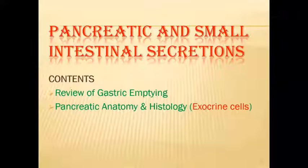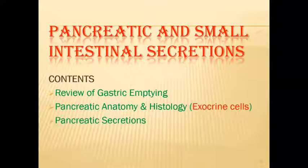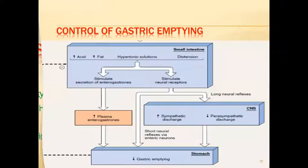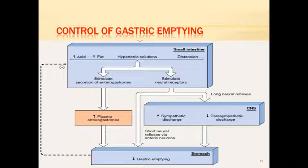We are looking at anatomic histology, especially exocrine function of the GIT, because we are interested in the production of enzymes involved in digestion and also the production of secretions like bicarbonates. These are exocrine functions of the pancreas. We start by reviewing gastric emptying - what is going to facilitate the emptying of chyme from the stomach into the duodenum involves both hormonal and neural control.